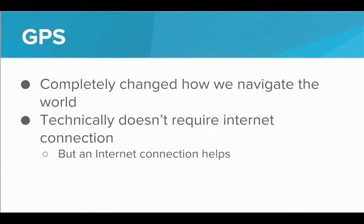Another incredible application of the Internet is GPS, or Global Positioning System. GPS has completely changed how we navigate the world — it used to be that you had to learn to read a map and bring one with you. Now you can leave your home with just your smartphone and have no problem finding where you need to be. Technically, GPS does not require an Internet connection because it uses other sensors, but an Internet connection can help speed it up and provide additional data like images and directions.